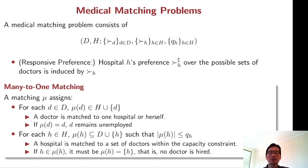Now we can define medical matching problem formally. So medical matching problem consists of set of doctors and set of hospitals. And each doctor has a preference over hospitals. And each hospital has a preference over doctors and a capacity constraint QH.